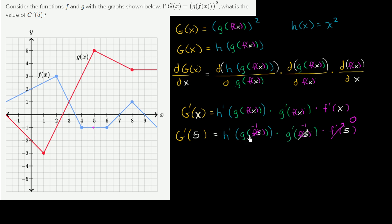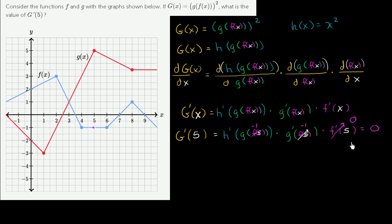Zero times anything times anything is going to be equal to zero. Another way of thinking about it: f of x isn't changing when x is equal to 5. If f of x isn't changing, then the input into g isn't changing, so g of f of x isn't changing, and therefore h of g of f of x isn't changing. So the derivative of capital G of x at x equals 5 is equal to zero.